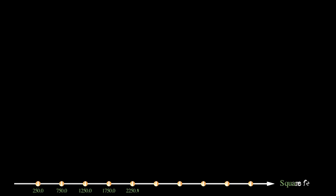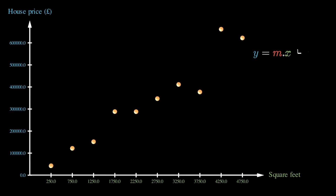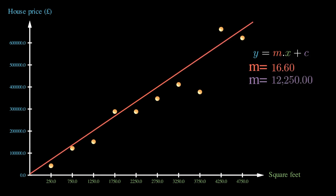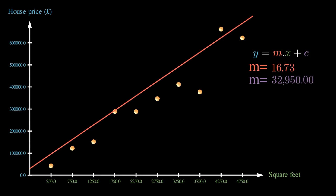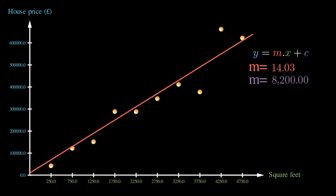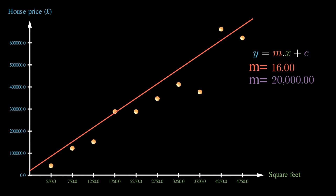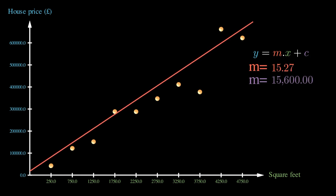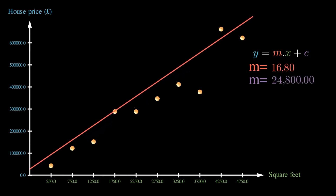Linear regression models the relationship between a target variable like a house price and one or more input variables like square footage by fitting a straight line to the data points. The goal is to find the line that minimizes the distance between the points and the line, using an approach called ordinary least squares. The slope of the line shows how much the output changes for each one unit increase in the input. Linear regression scales well to include other data points too, such as proximity to transport hubs and number of bedrooms. While multiple dimensions are hard to visualize, they present no problem at all to the algorithm.